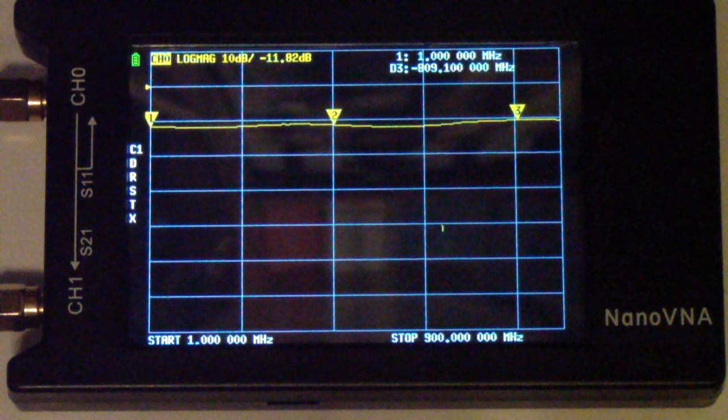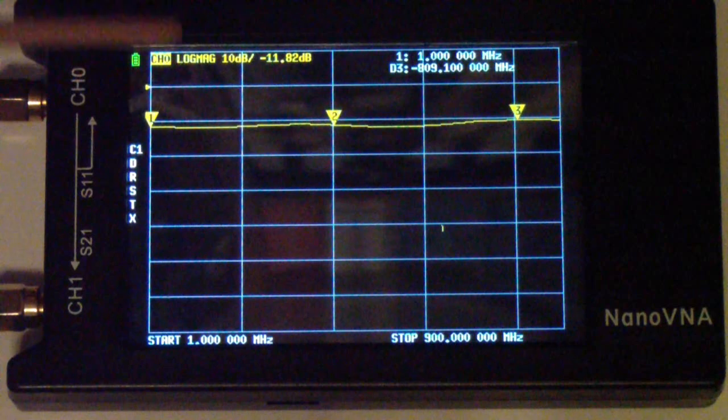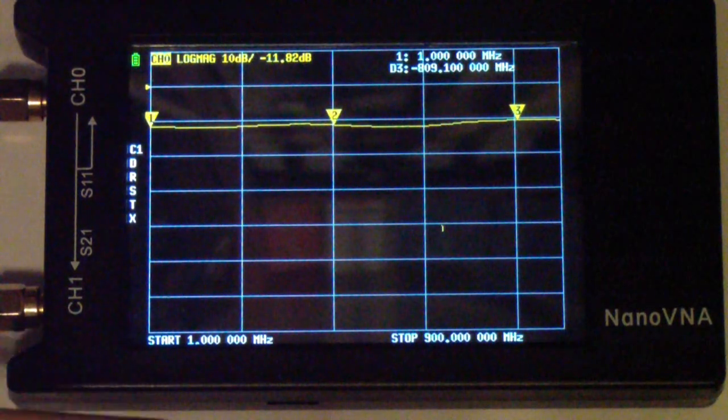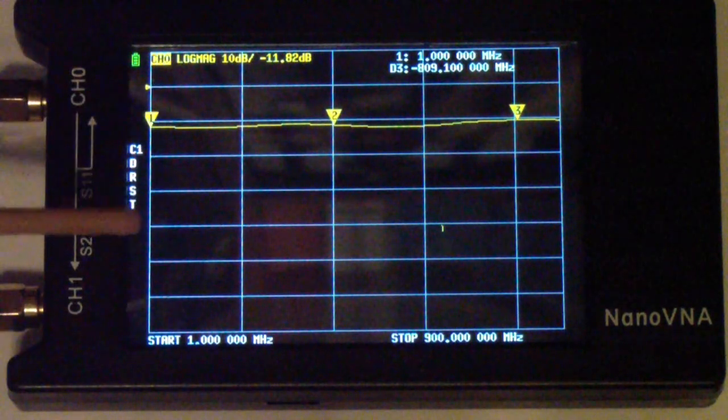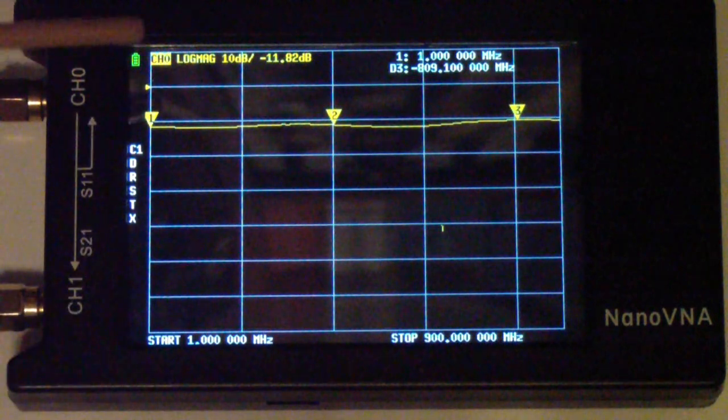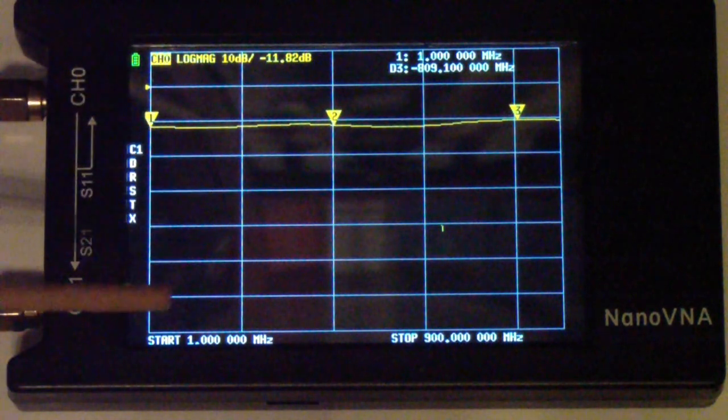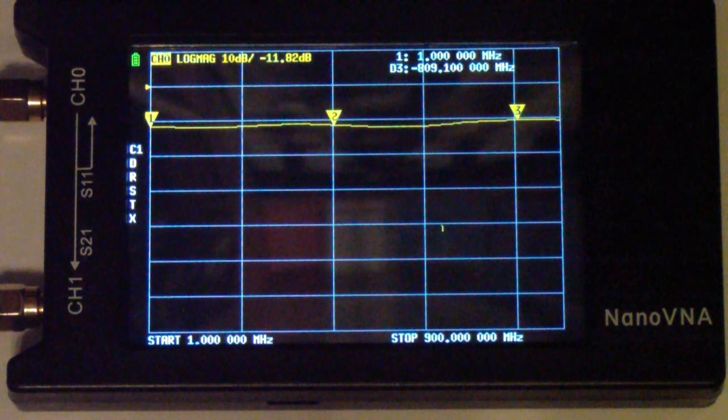Now what that stands for is log just means it's a logarithmic amplitude. In other words, instead of it being like 10 volts, 20 volts, 30 volts, it's 10 dB, 20 dB, 30 dB. Talk about dB later.